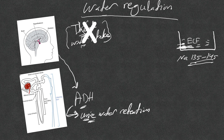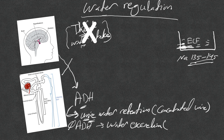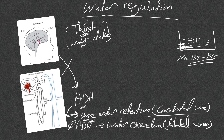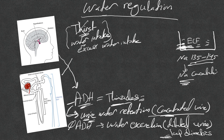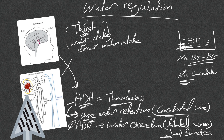If there is excess water in the ECF, the thirst mechanism is deactivated, ADH release stops, and we have water excretion via dilute urine. Thiazide diuretics essentially act like ADH — they cause concentrated urine — while loop diuretics cause dilute urine. That's why we see much more hyponatremia with thiazide diuretics compared to loop diuretics. Additionally, intact kidney function and adequate GFR are required for proper urine concentration and dilution.